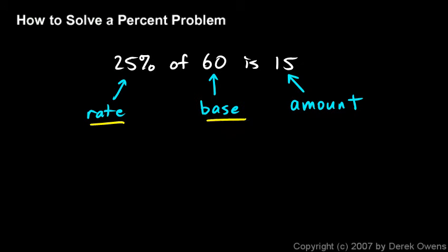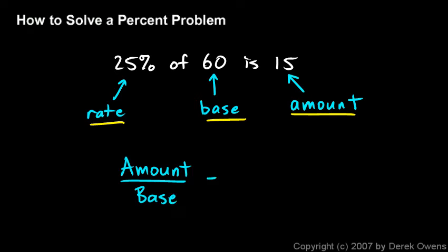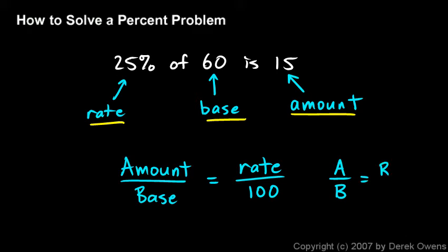These three things are always set up in a certain proportion called the percent proportion. You can always say that the amount divided by the base equals the rate divided by 100. We can write that in simple form as a/b = r/100, where a stands for amount, b stands for base, and r stands for rate.